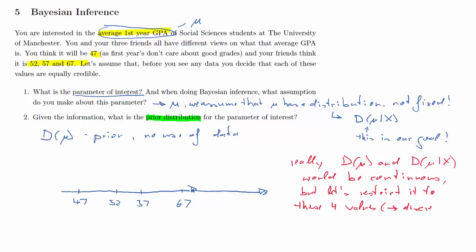We will not entertain that mu could take any other values. That's, of course, unrealistic, but the idea of Bayesian inference can nevertheless be illustrated using this. So what's the prior distribution?